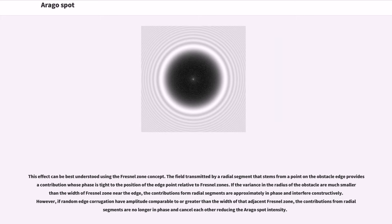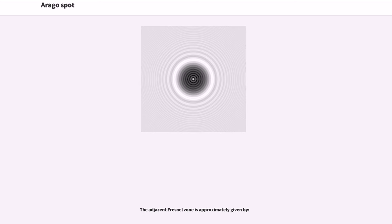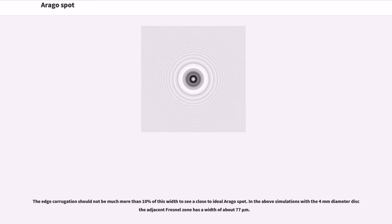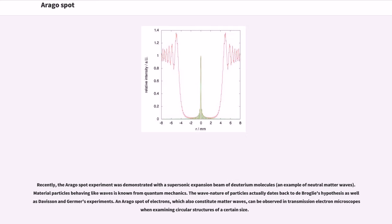The adjacent Fresnel zone is approximately given by a certain formula. The edge corrugation should not be much more than 10% of this width to see a close to ideal Arago spot. In the above simulations with the 4 mm diameter disc, the adjacent Fresnel zone has a width of about 77 micrometers.